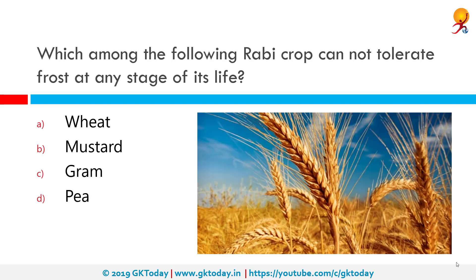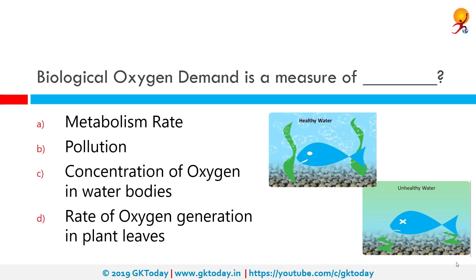Which rabi crop cannot tolerate frost at any stage of its life? The correct answer is gram. Good rain in winter spoils rabi crops but is good for kharif crops. The major rabi crops in India are wheat, followed by barley, mustard, sesame, and peas.